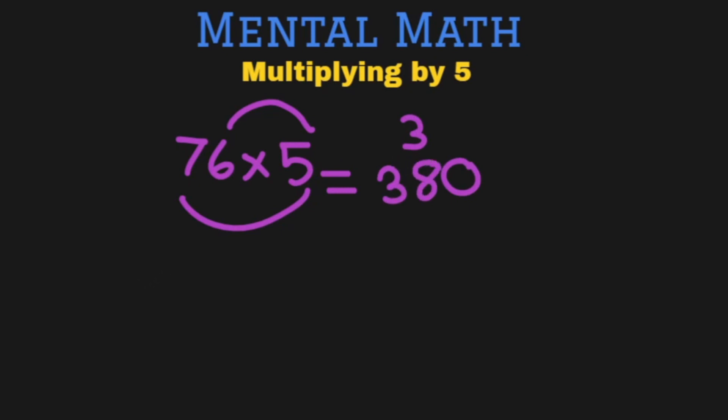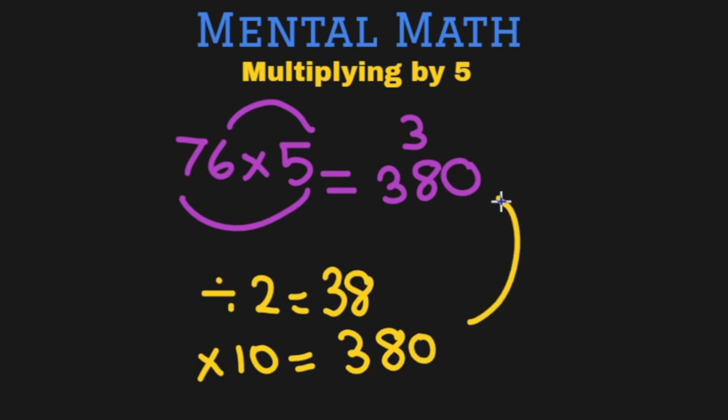And how do we solve the same question using our very sweet trick? Divide by 2 gives us 38. 76 divided by 2 is 38. Multiply by 10 gives us 380. Again same answer. Simple.